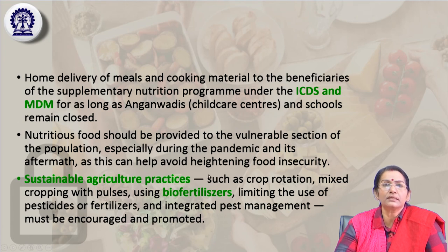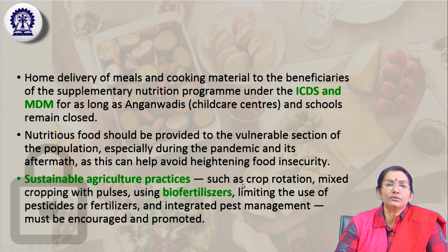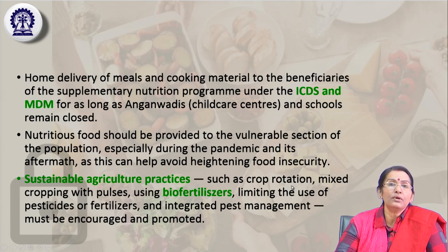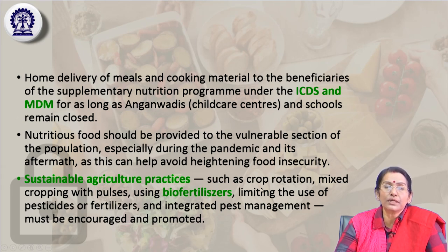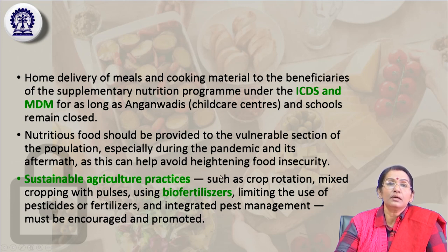Sustainable agriculture practices such as crop rotation, mixed cropping, use of pulses and bio-fertilizers, limiting use of pesticides and fertilizers, and integrated waste management must be encouraged, promoted, and educated to stakeholders. Proper training and outreach programs should be organized from time to time to update and educate farmers and all stakeholders directly or indirectly related to farming, agriculture, and food storage, so that minimum wastage takes place and we can achieve a sustainable and secure food security system.